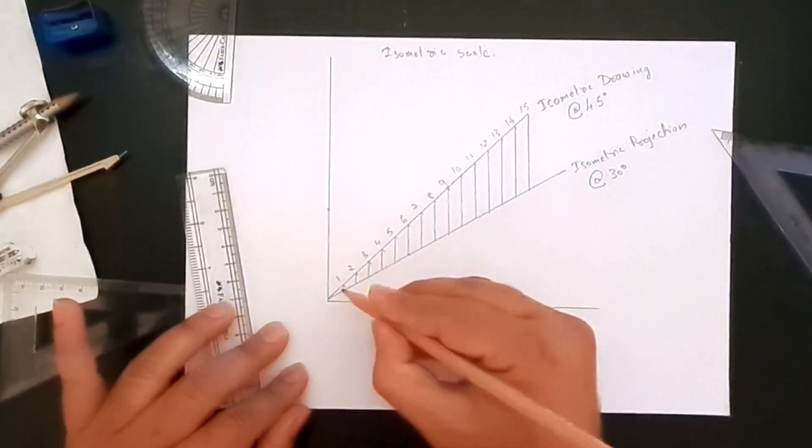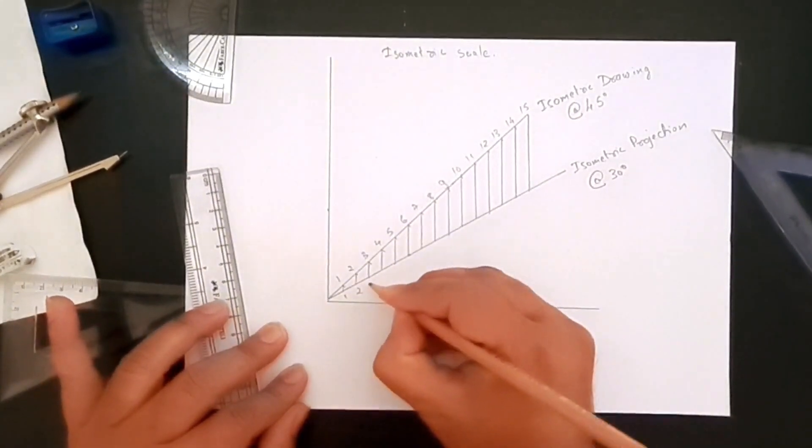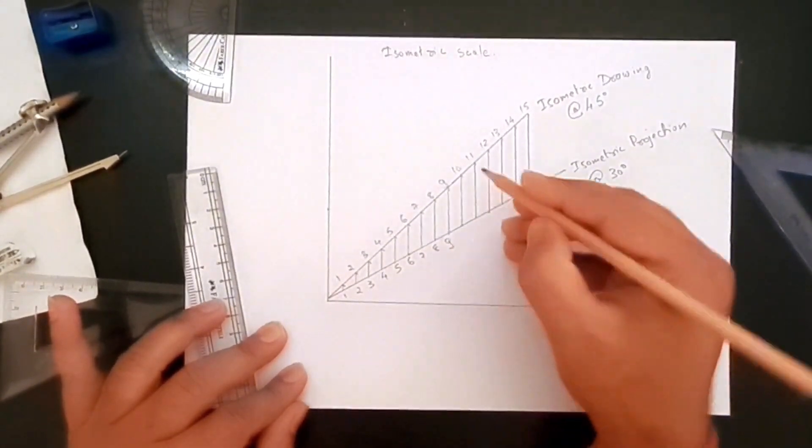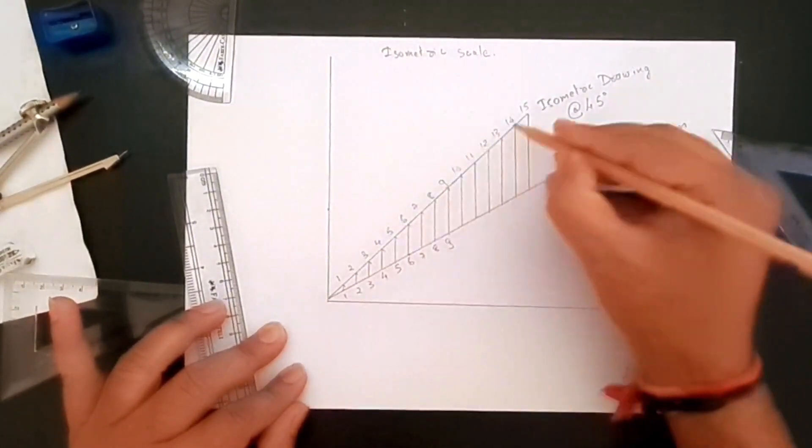And we can number them 1, 2, 3, 4, 5, 6, 7. We are just copying the numbers from the isometric drawing scale to isometric projection scale.